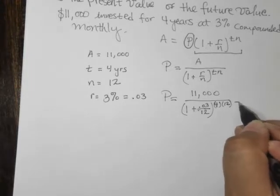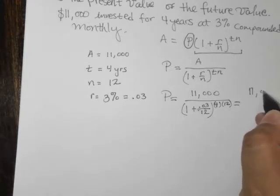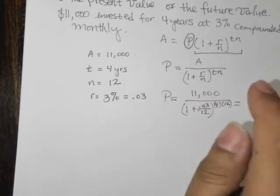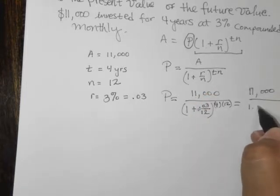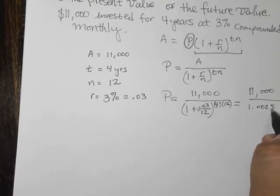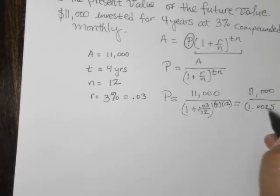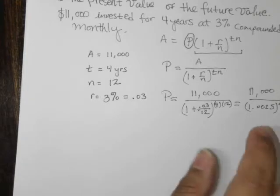And to the power of 4 times 12. And I'm just going to clean it up just a little bit. 11,000 divided by, and then this right here works out to be 1.0025. This is basically like a fourth, but it's not quite, raised to the power of 48.